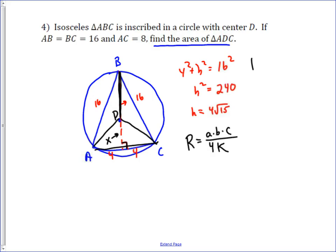The area of our triangle is going to be 1 half base, which is 8 times the height, which we found, which was 4 root 15. And so, that's going to get us 16 root 15.